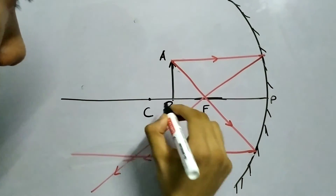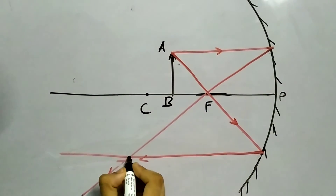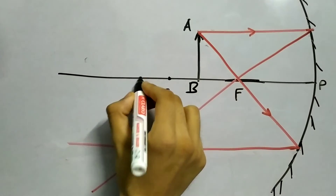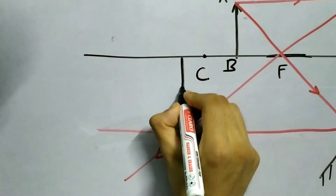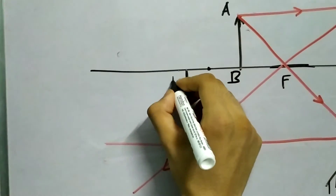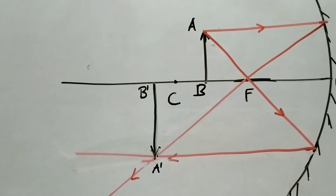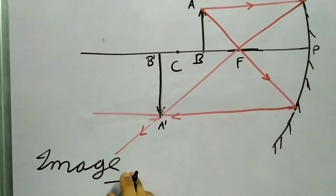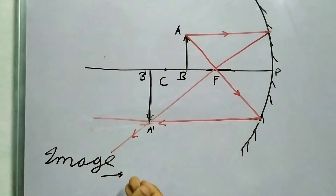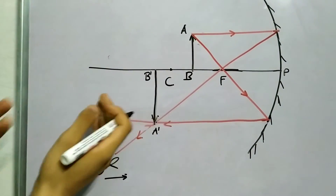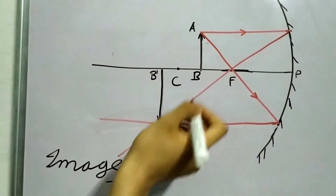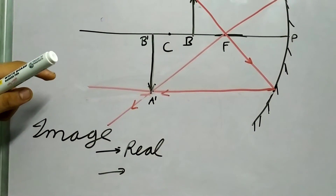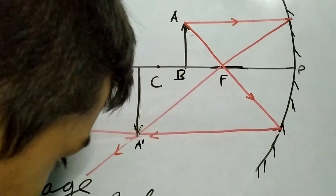Now, let us call this A dash. Looking at the properties: the rays are again meeting at a point, somewhere beyond the center of curvature. And since the rays are meeting, it will be a real image. And is it inverted or erect? Again, it is clearly inverted.